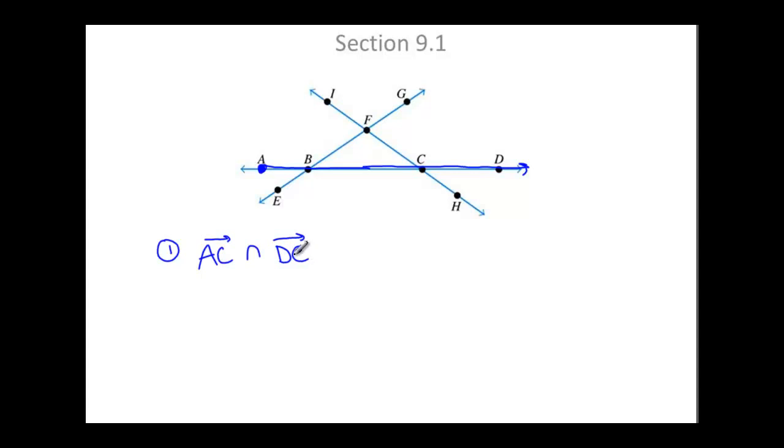Let's do the same thing with ray DC. We're going to begin with end point D. It is included on the ray, so we'll make sure and color that in. For ray DC, we want to go in the direction of C. It doesn't stop at C. It's going to continue going on forever and ever.